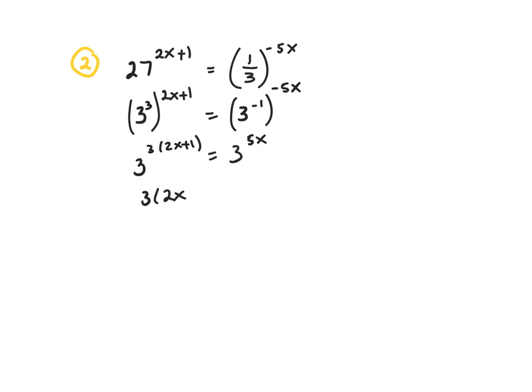That leaves you 3(2x plus 1) equal 5x, and that's 6x plus 3 equal 5x. Subtract 5x from both sides, subtract 3 from both sides, we get x equal negative 3.